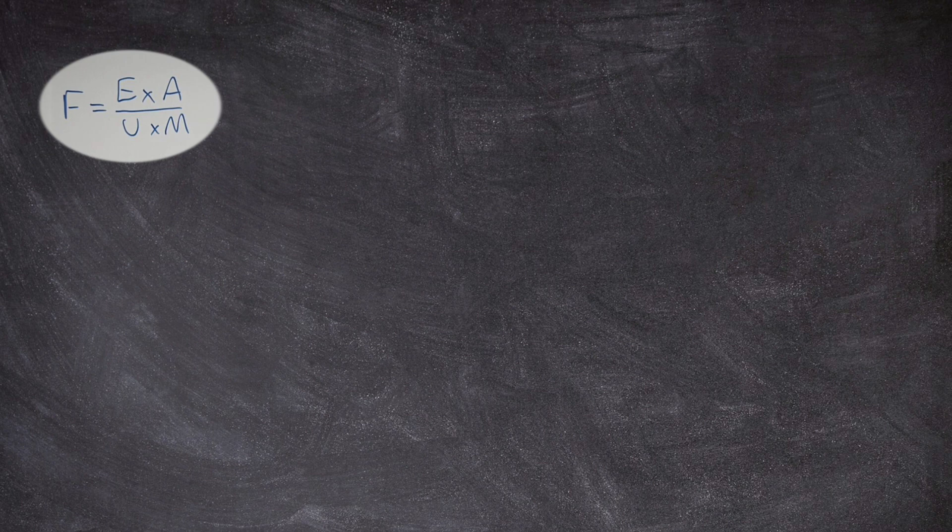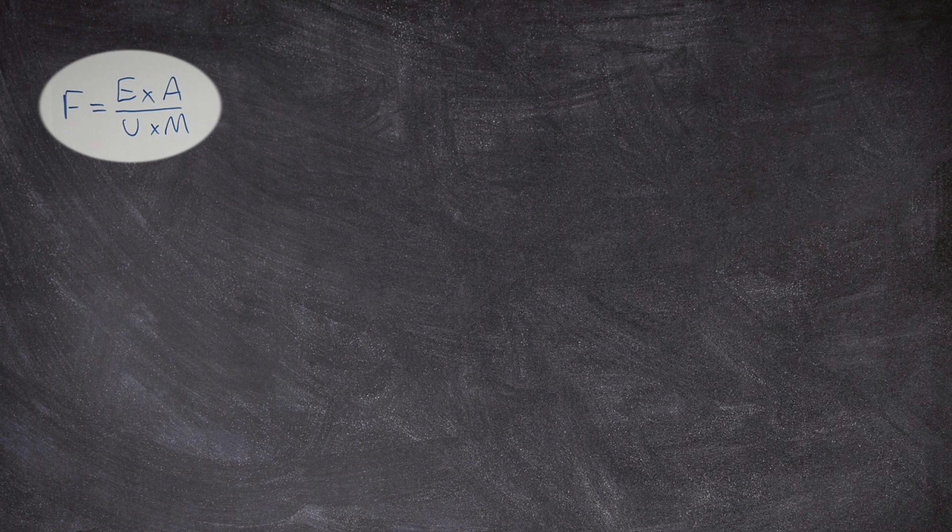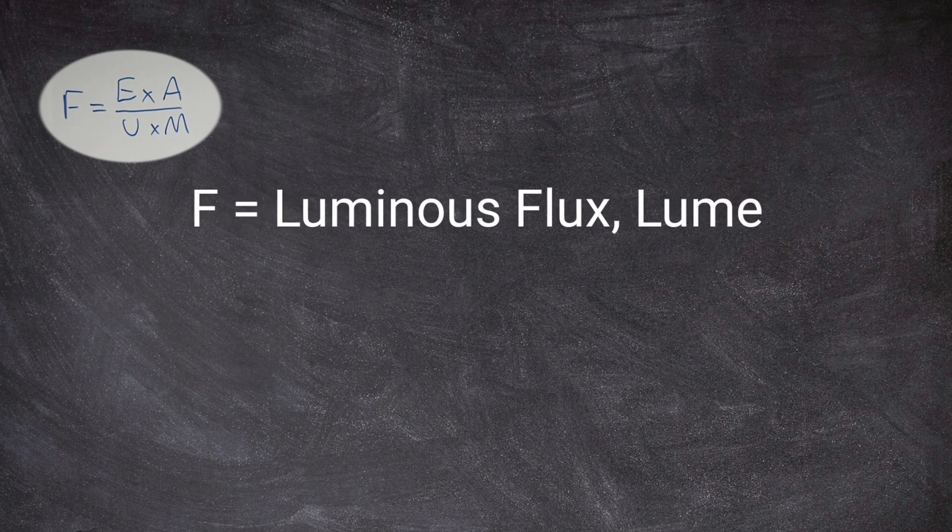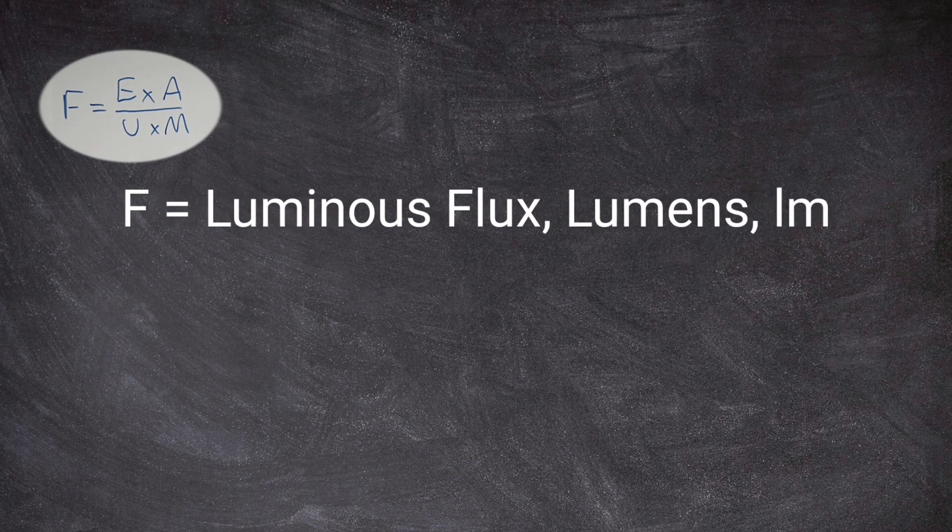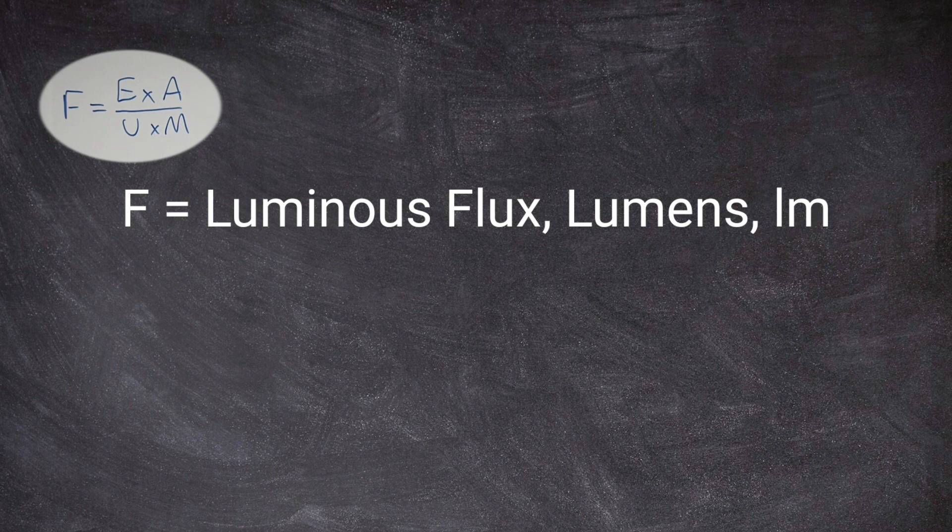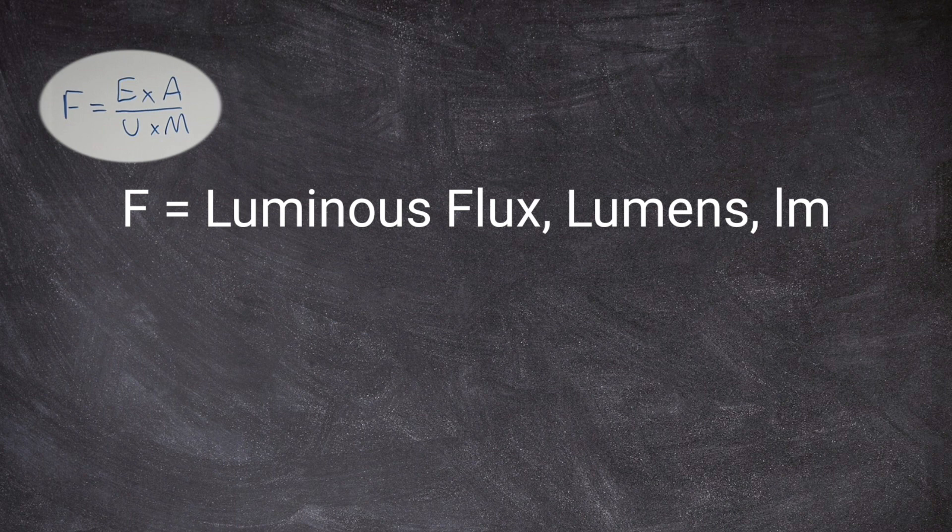So first of all we've got F which is the thing that we're trying to find with this formula. Now F stands for luminous flux. So F is the mathematical symbol that we're going to be using and it stands for luminous flux and luminous flux is measured in lumens and we give it the unit symbol LM. But what is luminous flux?